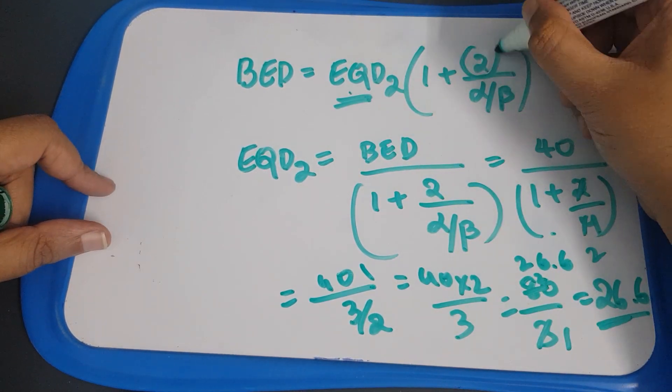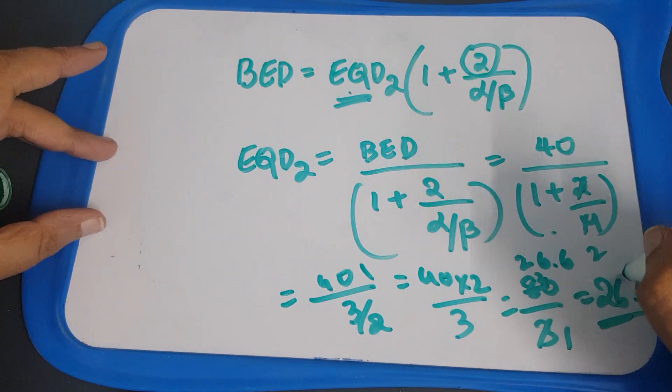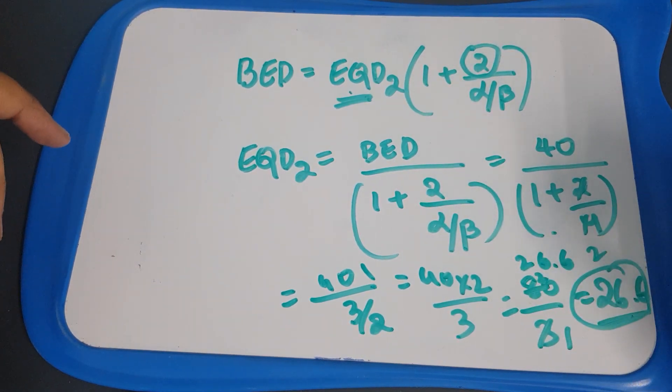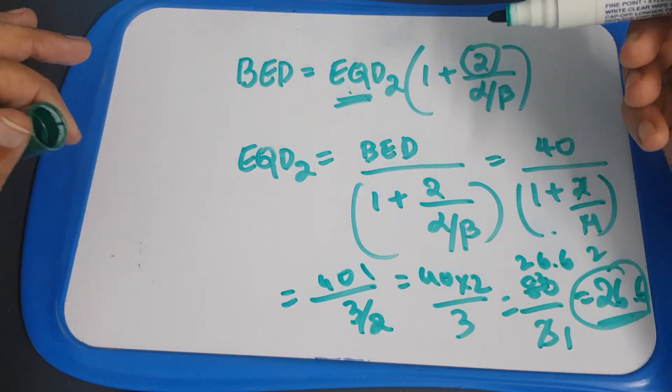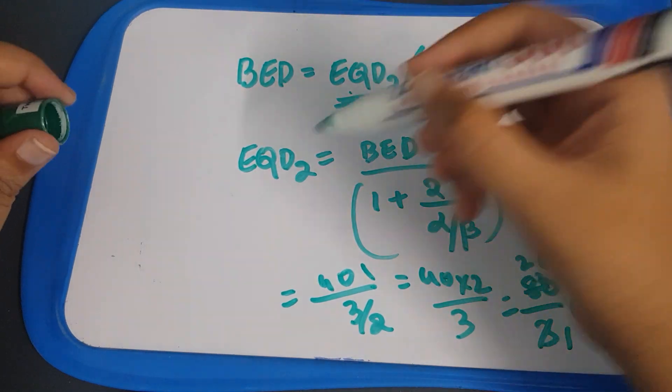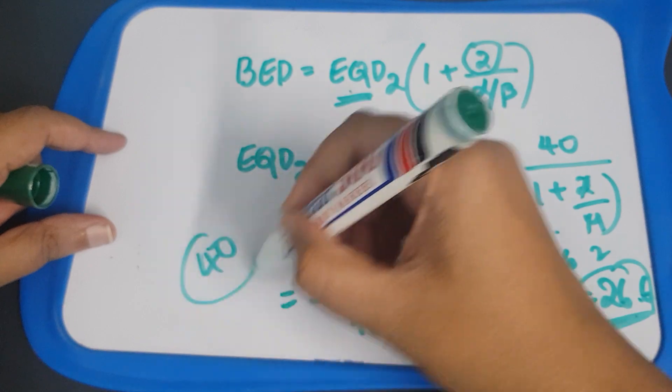It is 26.6 gray. If you are giving 2 gray per fraction, how much do you have to give? You have to give 26.6 gray. But we are giving 20 gray in 5 fractions with 4 gray per fraction where the biological effectiveness is 40 gray.